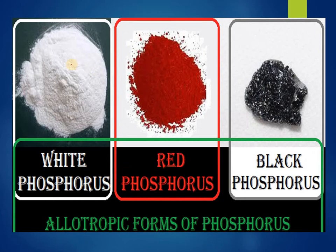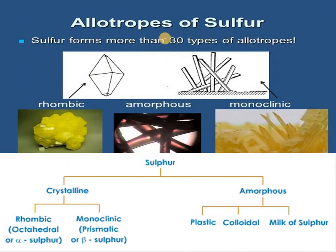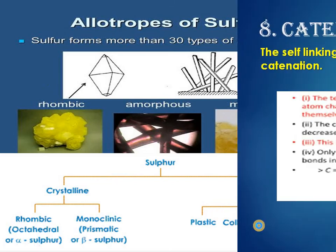Phosphorus mainly exists in four types; the three most important are white, red, and black phosphorus. Sulfur forms more than 30 types of allotropes. The main ones discussed are rhombic, amorphous, and monoclinic. Similar to carbon, sulfur exists in crystalline and amorphous forms: crystalline sulfur includes rhombic and monoclinic, while amorphous sulfur includes plastic, colloidal, and milk of sulfur.